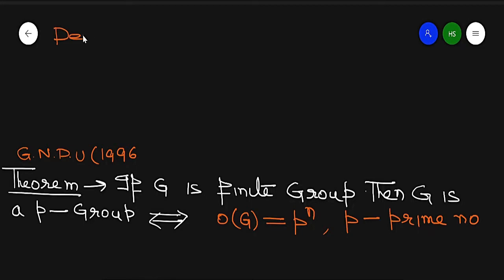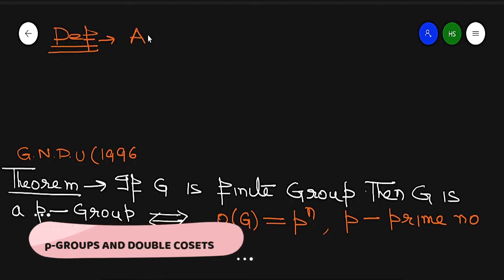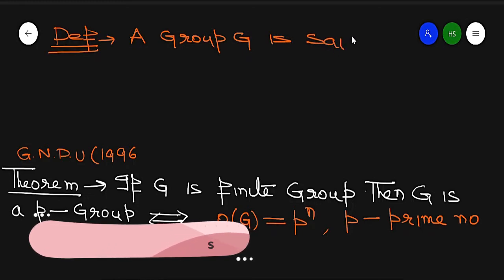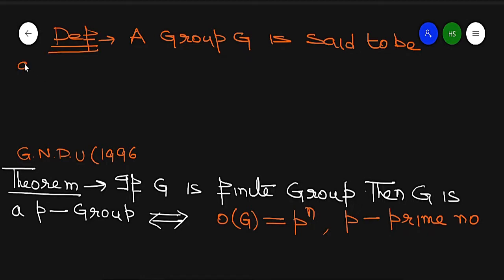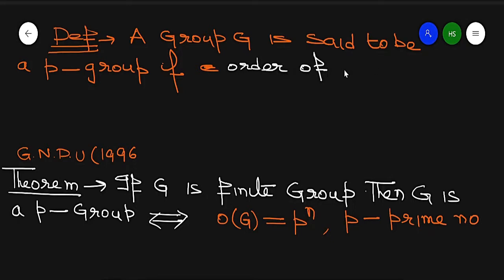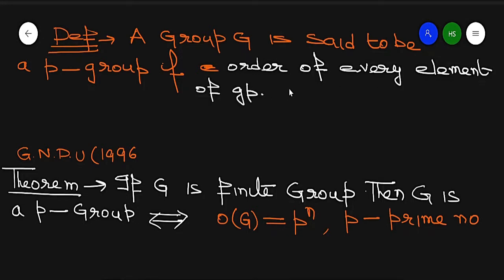What is the statement of the P-group? A group G is said to be a P-group if every element of G has order that is a power of a prime number.